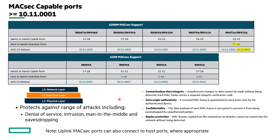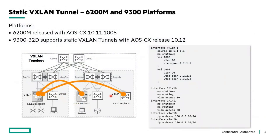Moving on, with the 6200M and the 9300 platforms we now also support static VXLAN tunnels. The 6200M released with AOS-CX 10.11.1005, and with the 10.12 release we now support static VXLAN with the 9300. It basically allows you to provide tunnels between two different VTEPs in the environment, so you can tunnel traffic from one VTEP to another using just static VXLAN support.